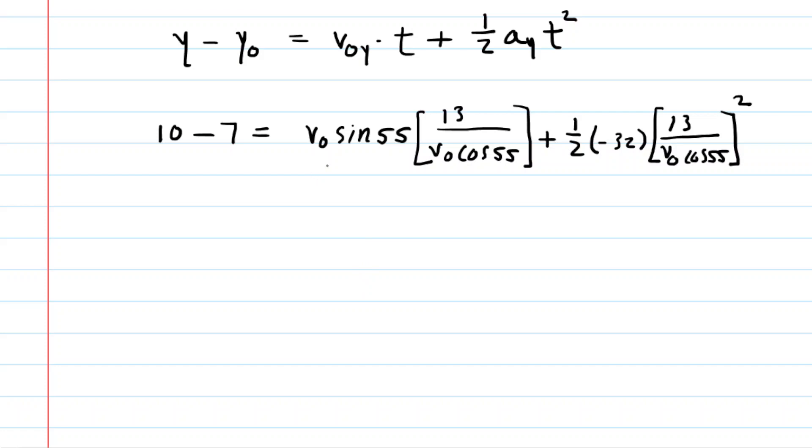Okay, we're getting very close here because if we look, we can simplify this equation very readily. So on the left side, we have just three. Now, look here. This is kind of neat. The v-naughts, when we divide, would cancel out. And then furthermore, we have the sine of 55 divided by the cosine of 55. Remember, a trig identity tells us that sine divided by cosine is tangent. So you actually have the tangent of 55 degrees, and then that's multiplied by 13.